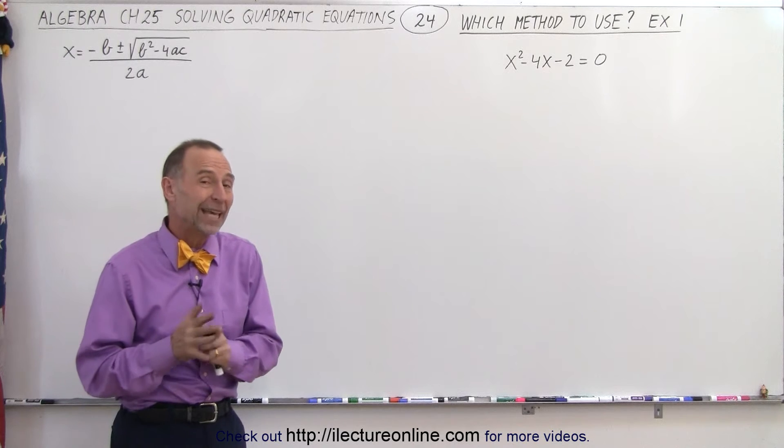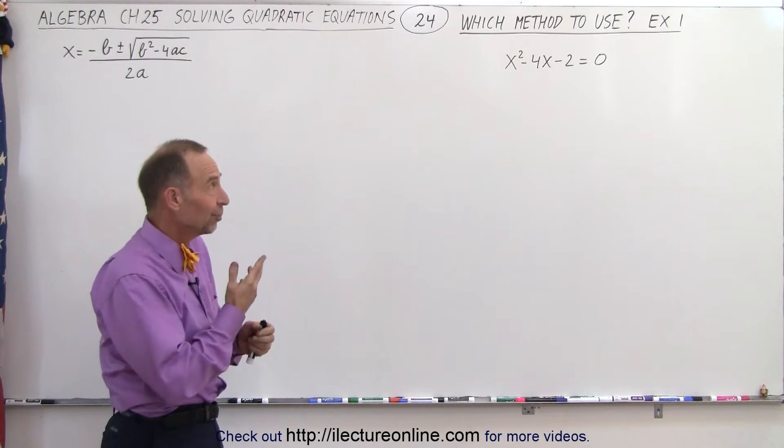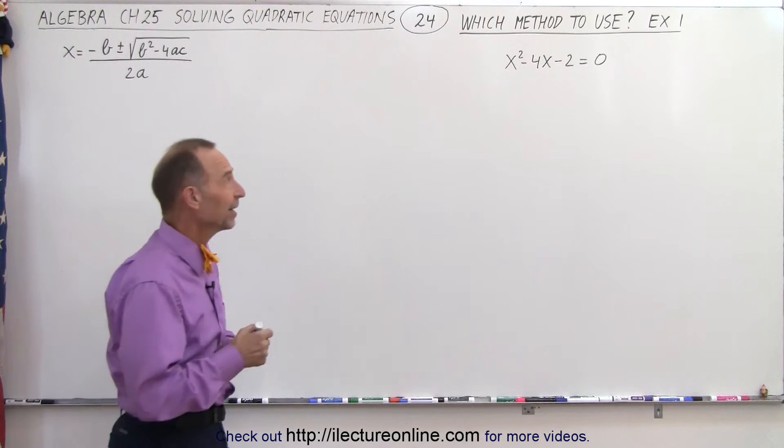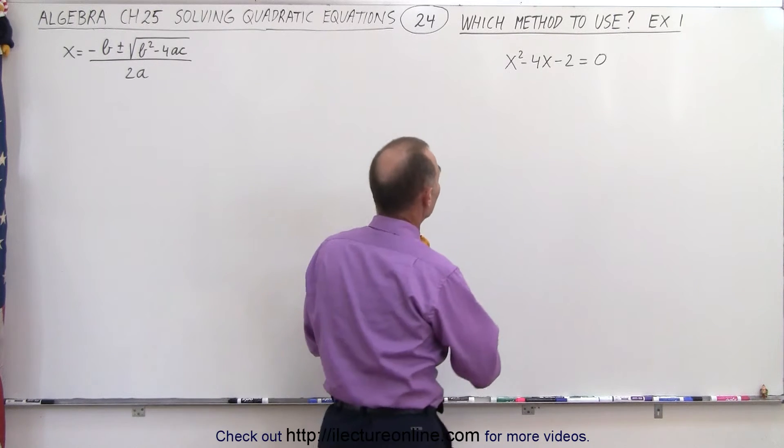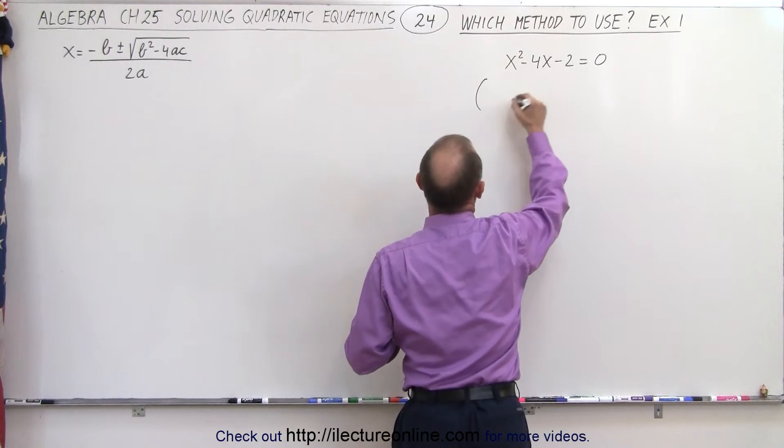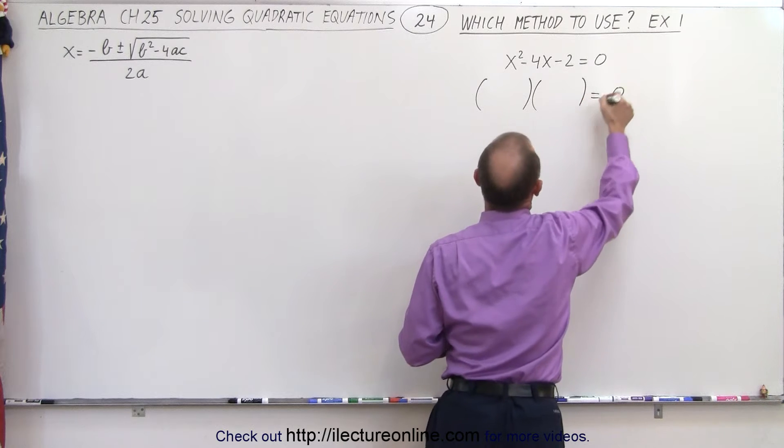Now we'll notice that we can't always factor it and this may be one of those cases, but we're going to find out. So if we're going to factor it, it will look as follows. We're going to have the product of two binomials set equal to zero.